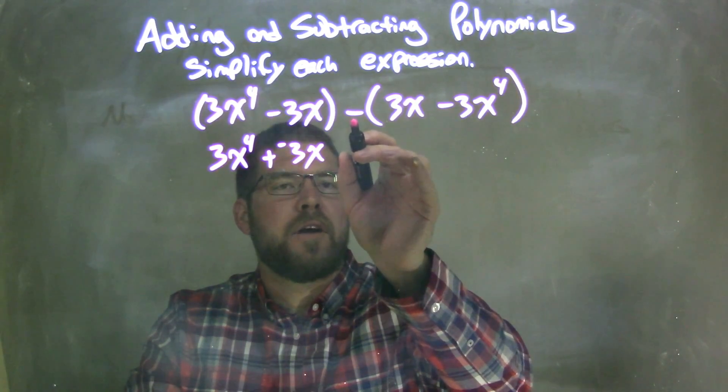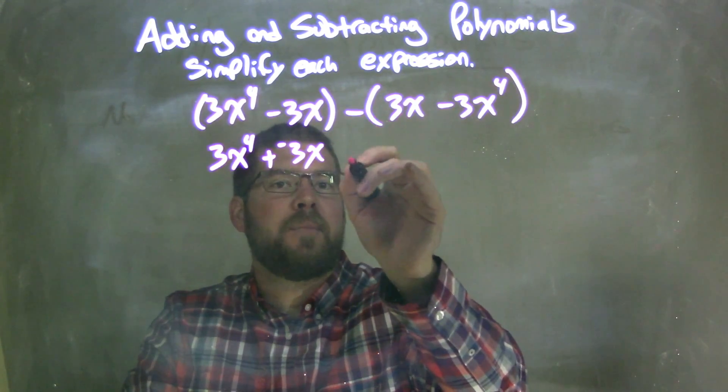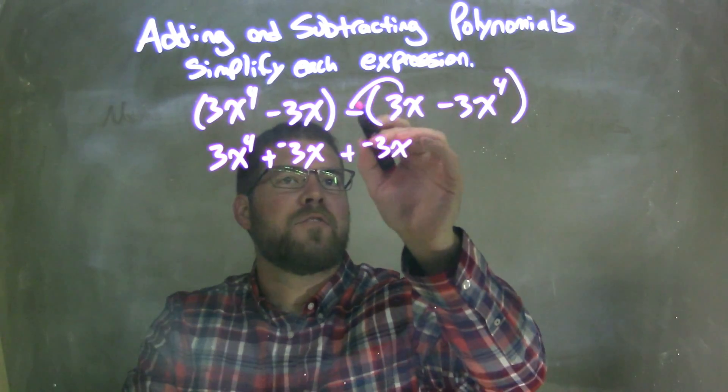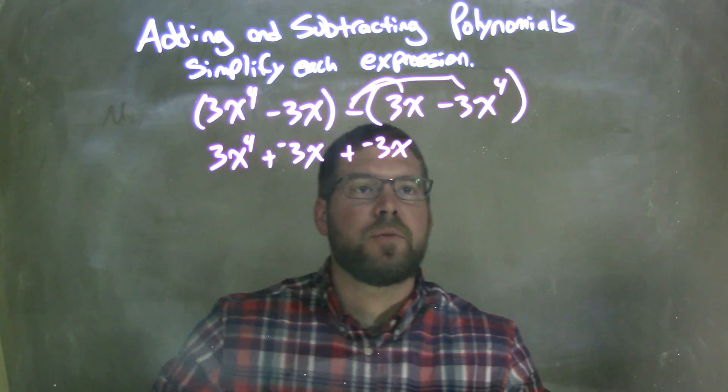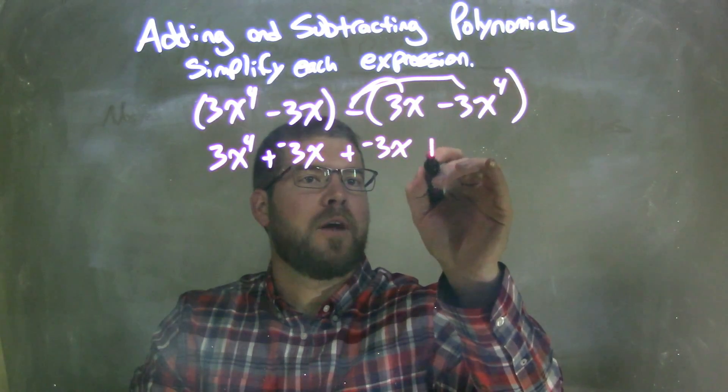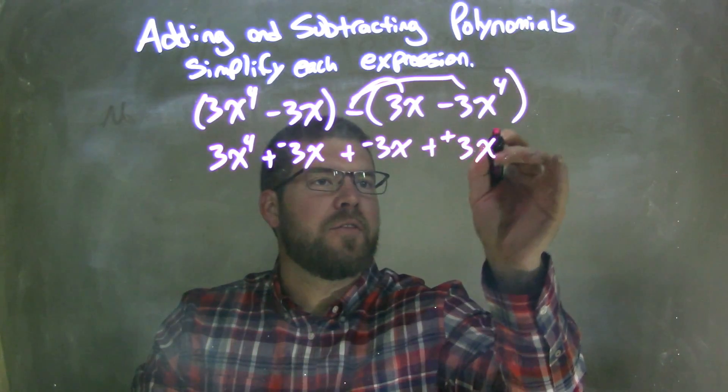So, distributed that minus, subtraction there, subtracting the 3x, the same thing as adding a negative 3x, distribute that to the 3x, and distribute again over here to subtracting a negative 3x to the 4th, right? Double negative. So, we have plus a positive 3x to the 4th here.